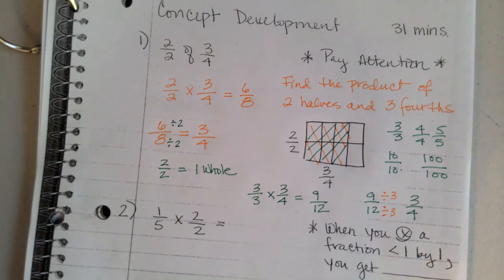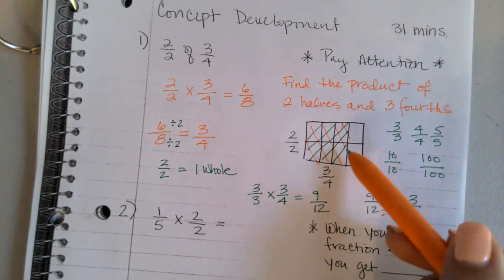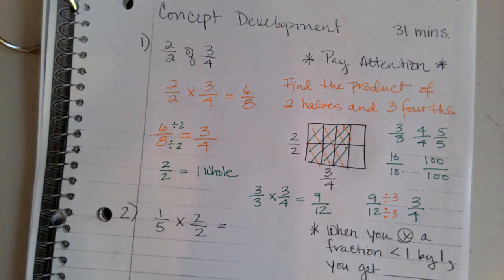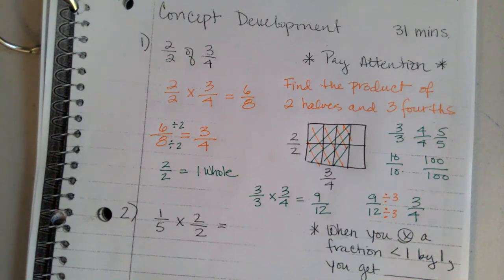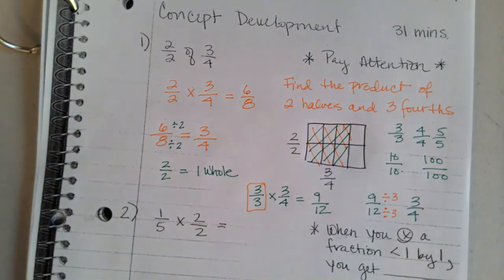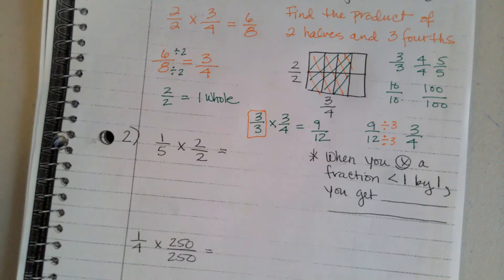Even though twelfths are a smaller unit, nine-twelfths is still equal to three-fourths. If we drew an area model again it would show exactly the same amount. You could do three-fourths times five-fifths, three-fourths times eight-over-eight, or three-fourths times one hundred over one hundred. Anytime we multiply by a fraction equal to one, our number is going to be the same — it's equivalent, just a fraction with a different name.